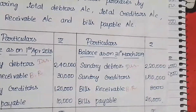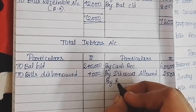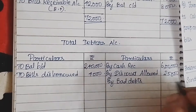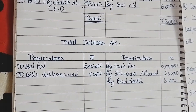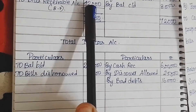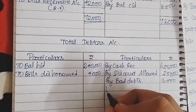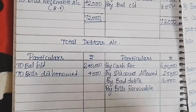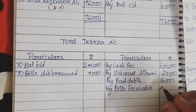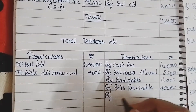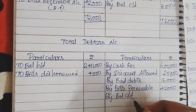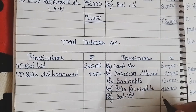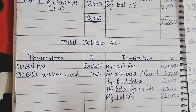Next, bad debts — 16,000. And closing balance — 2,20,000. By bad debts — 16,000. Then by bills receivable — 42,000. By balance carry down — closing balance — 2,20,000.